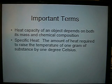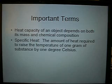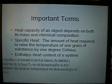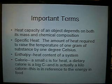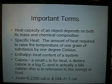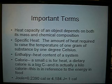The amount of heat required, heat capacity, mass chemical composition, enthalpy — the heat content of a system. Calorie: small c for heat, big C for dietary calorie. Joule: 2.2390 calories or 4.184 joules.